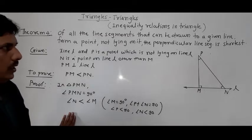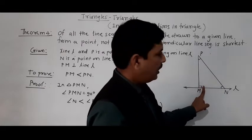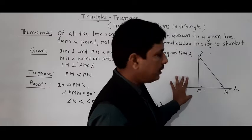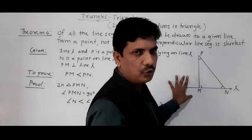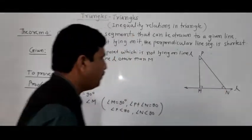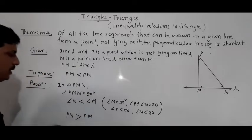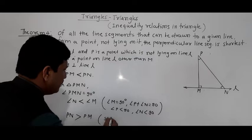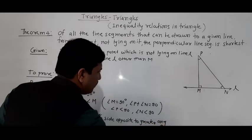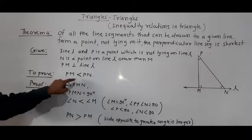We know that the side opposite to the greater angle is larger. The greater angle is M, and the side opposite to M is PN. The side opposite to angle N is PM. Since angle M is greater than angle N, the side opposite to the greater angle is larger, so PN is greater than PM.